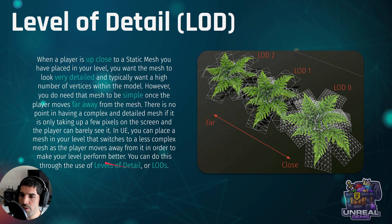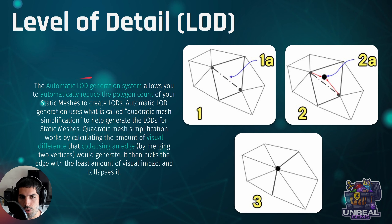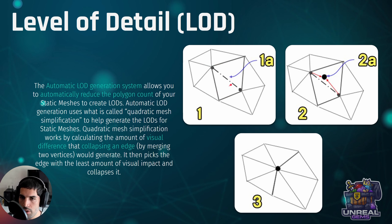How does Unreal calculate how to simplify the mesh? We not only have a system to switch LODs automatically, but to also calculate them. It does this using quadratic mesh simplification. It's going to try to get rid of edges that do not impact the visual quality in the mesh. In this case you can see here that we are targeting this edge right here — we are going to get rid of it, so we are going to need to place a new vertex and displace the existing vertices if needed to get fewer polygons.